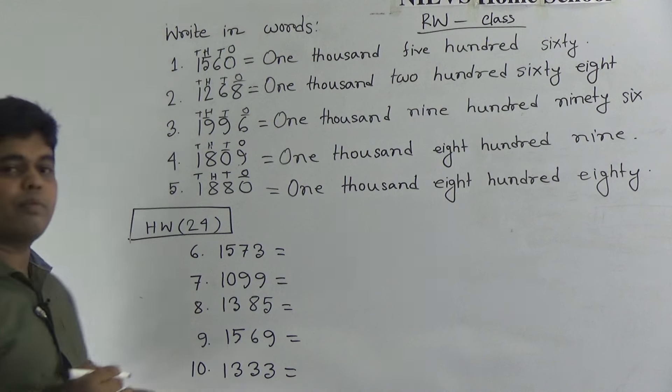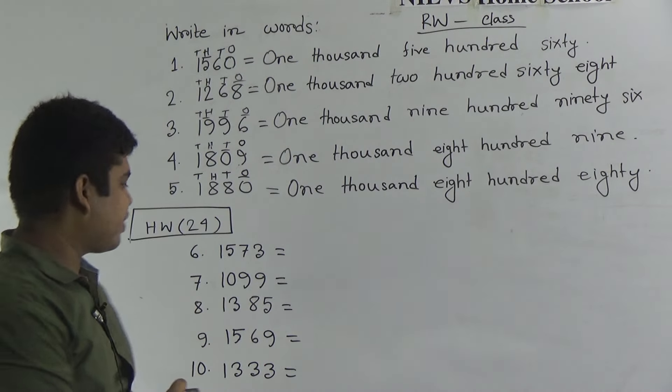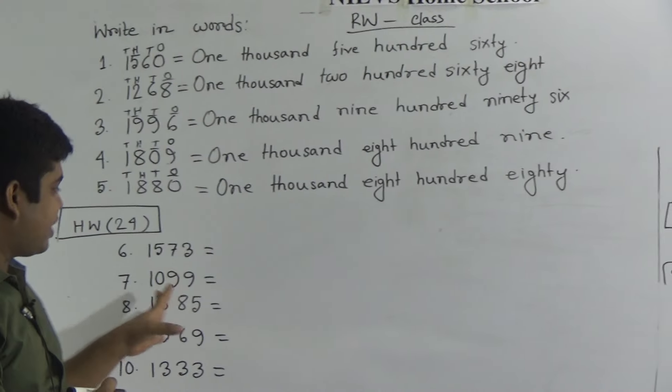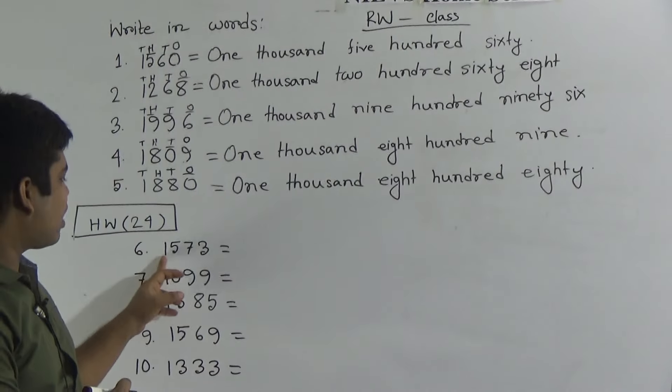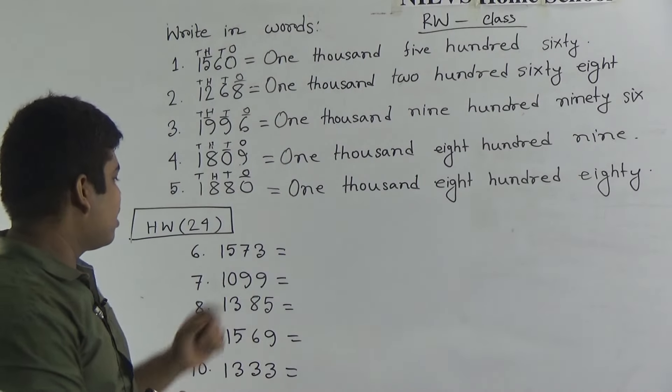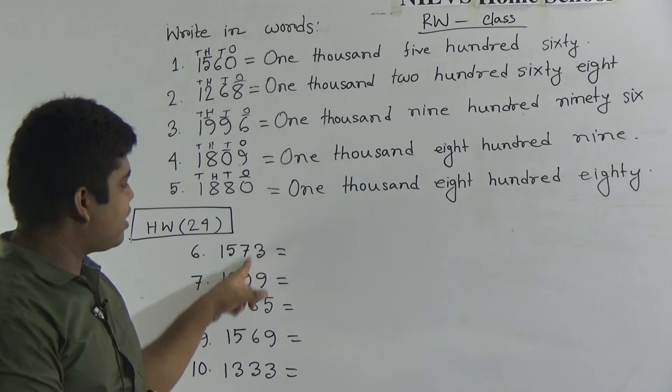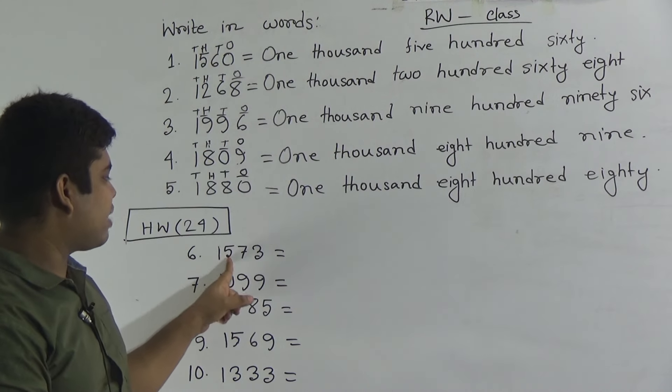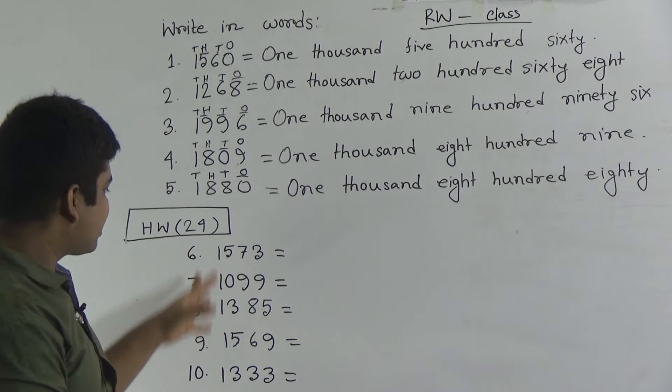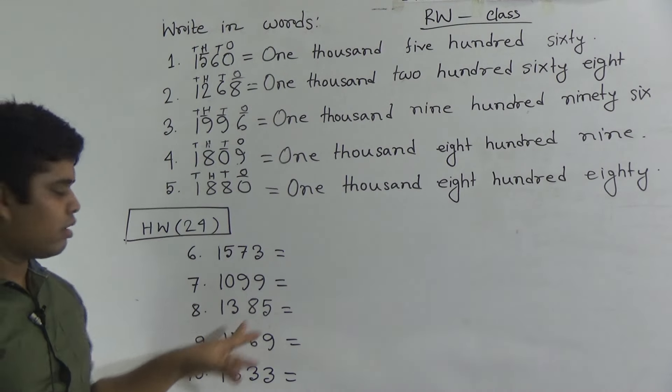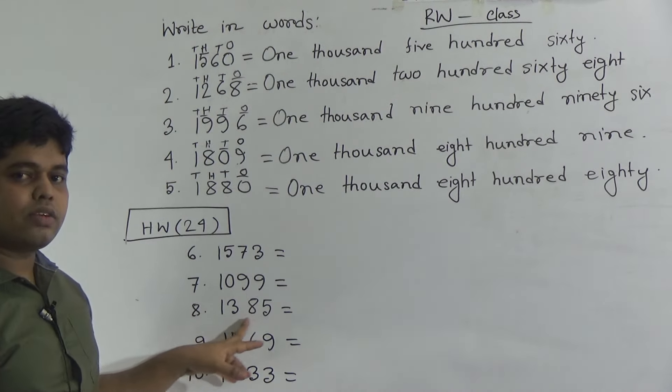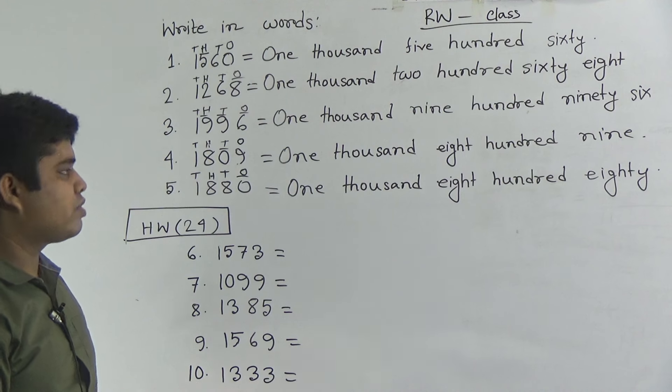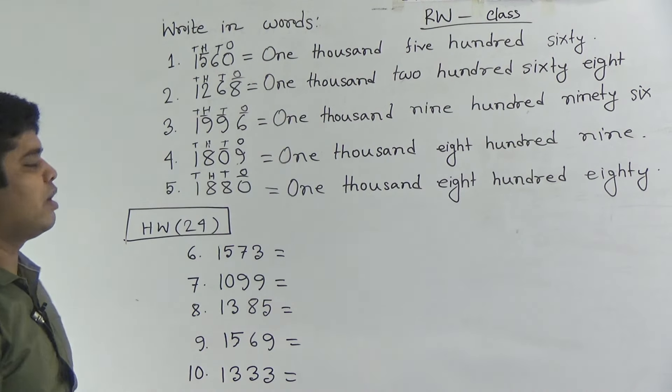Now I shall give you some problems to solve as your SW. Here, 6 number 1573. What will be the number? At first you read the number. 1573 makes which number? 3 is in ones place, 7 is in tens place, 5 is in 100 place and 1 is in thousand place. So we can read this 1573. Just like this you shall solve the other ones. Here number 1099, 8 number 1385, 9 number 1569, 10 number 1333. This is your SW and SW number 24.